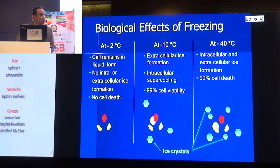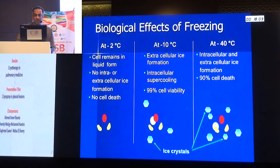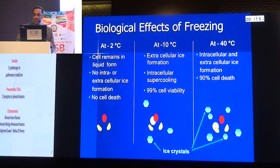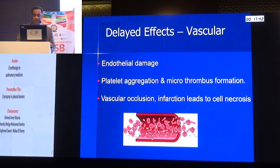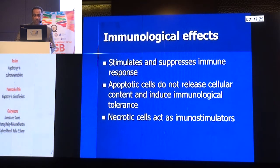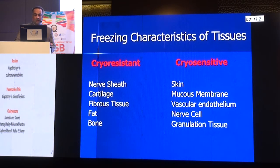The biological effect of freezing depends on the degree of cooling. At minus 2 to minus 10°C, nothing will occur and 90% of cells will be viable. At minus 40°C and lower, there is crystal destruction of cell organelles, causing 90% destruction of the cell — immediately during freezing. After two days, there is a vascular effect of cryotherapy due to vascular occlusion and infarction, leading to more cell necrosis. After 7 to 10 days, there is an immunological effect, as necrotic cells act as immunostimulators. Cryo-resistant tissues are nerve sheaths, cartilage, fibrous tissue, fat, and bone; cryo-sensitive tissues are skin, mucous membrane, vascular endothelium, nerve cells, and granulation tissue.